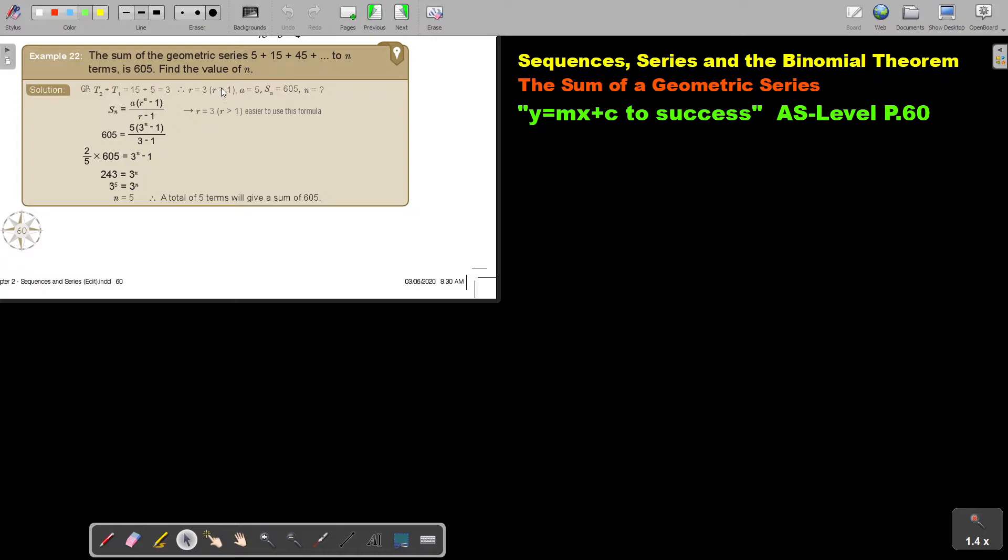Because R is bigger, 3 is bigger than 1, I put the R's in front. And then I just simplify this. And I will see this N will be 5. A total of 5 terms will give a sum of 605.